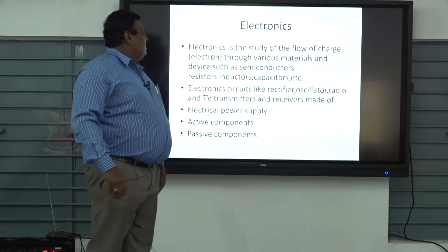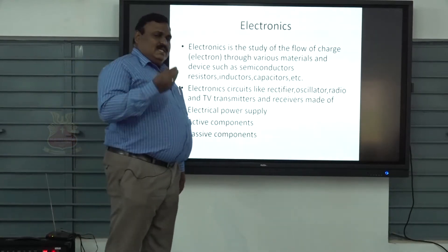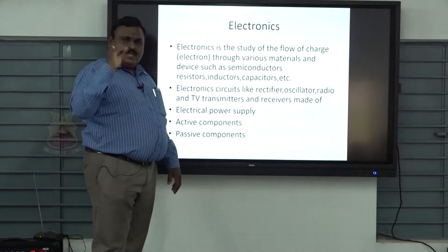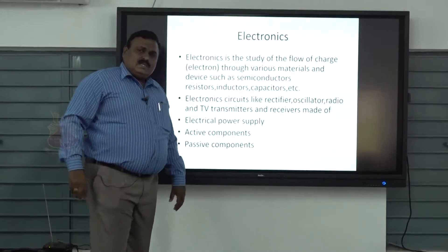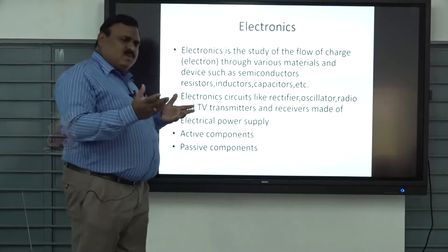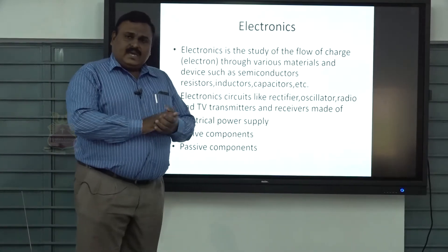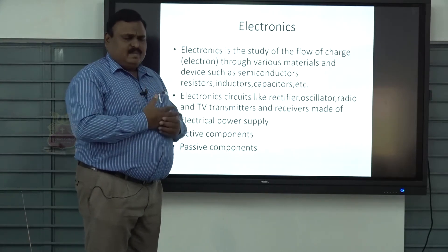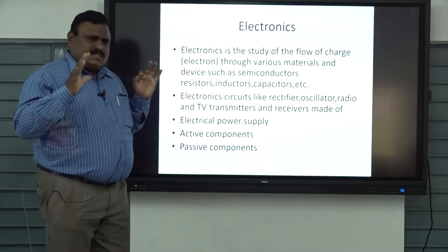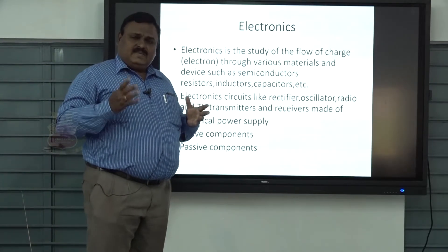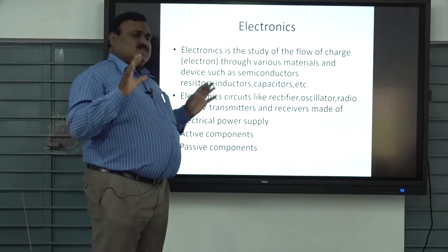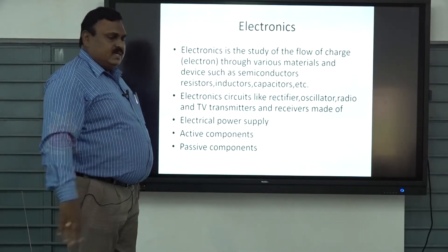What is electronics? We have been studying about electronics from lower classes, and we see this word everywhere. What is the physical definition? Electronics is nothing but the study of the flow of charge of electrons in various materials, such as semiconductors, conductors, or some other materials. The charge is essentially electron flow - simply the flow of charge in any material, whether conductor, resistor, capacitor, or insulator.